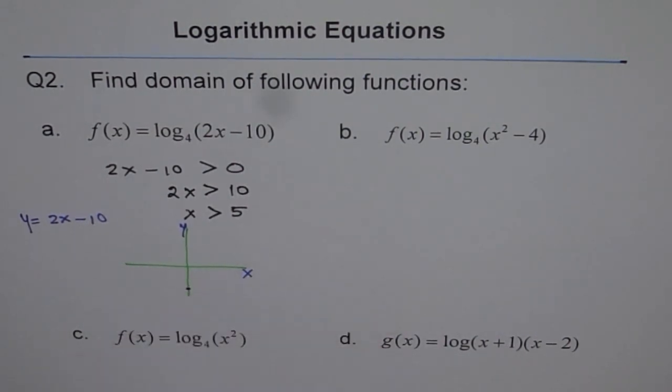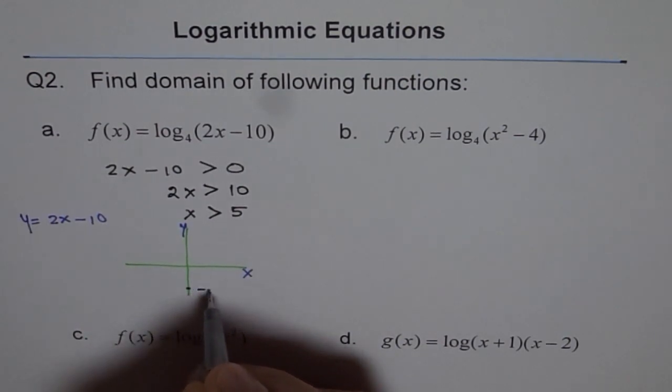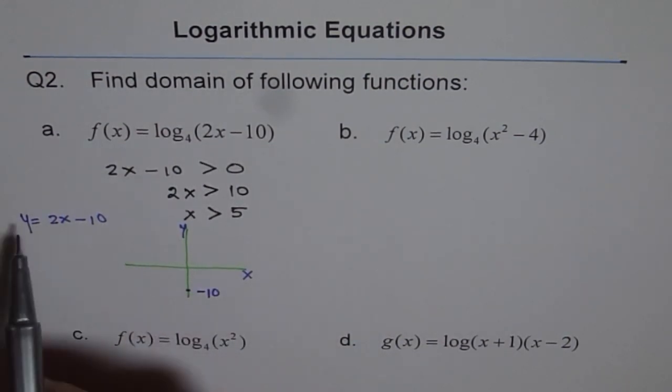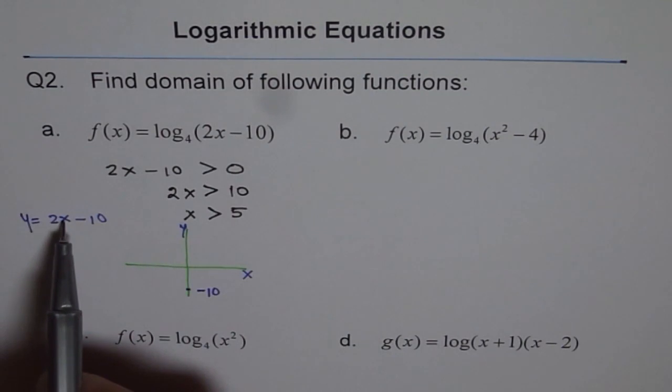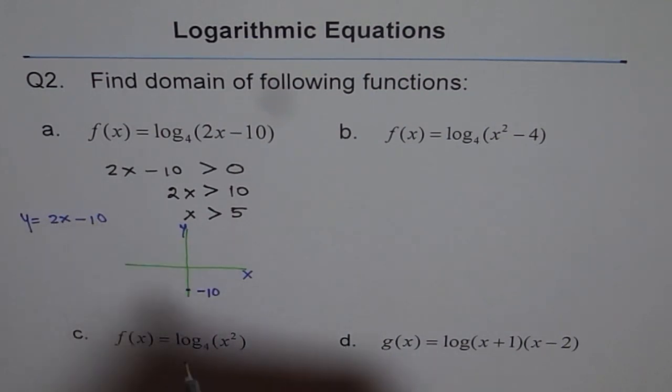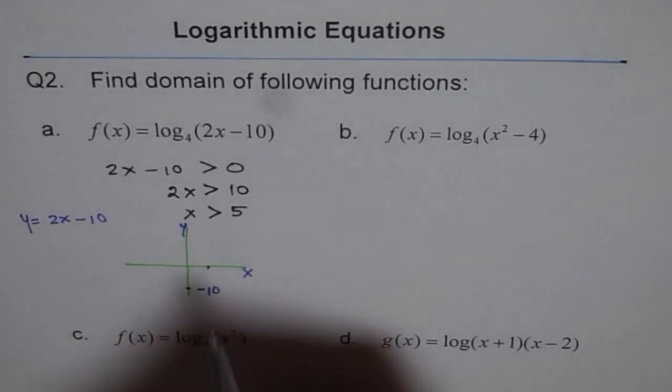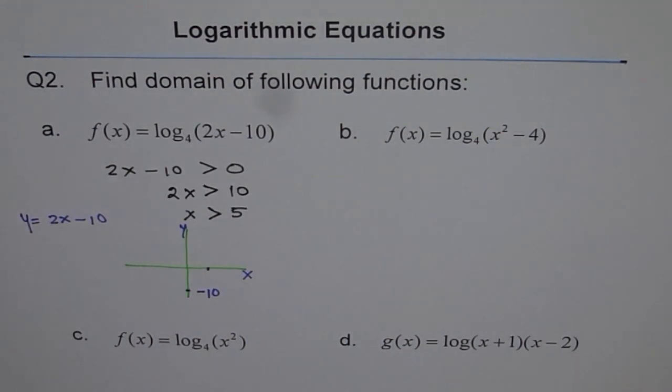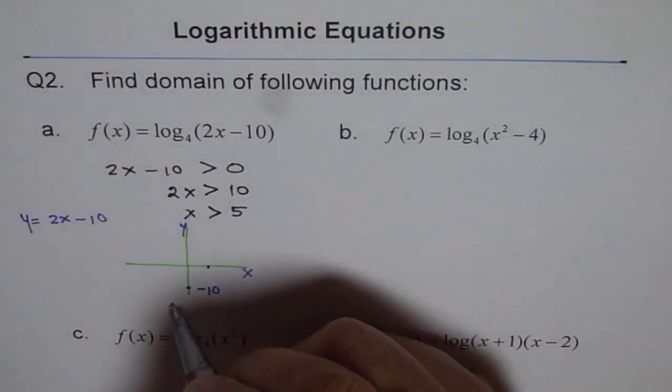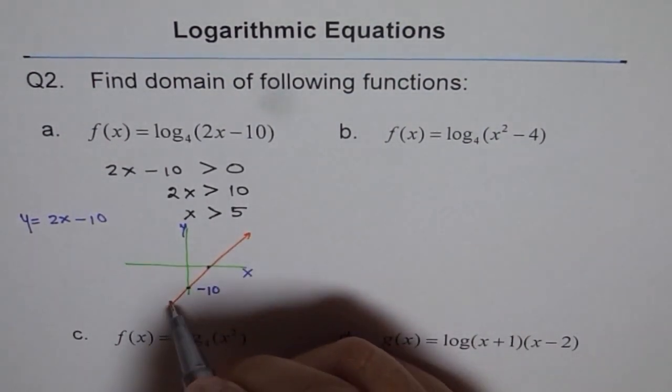Let's say this is our -10. Now if I put y as 0, then I get x as 10 divided by 2. So I get +5. Those are my two points and I can join them and get a line.